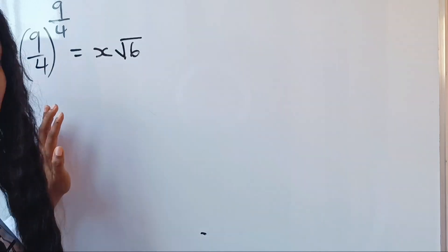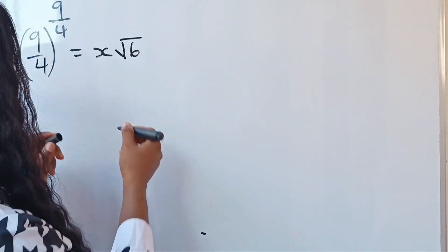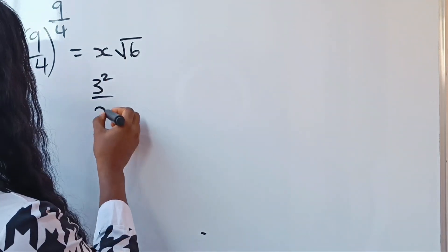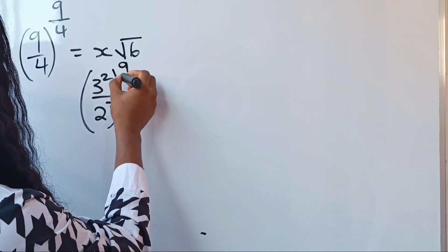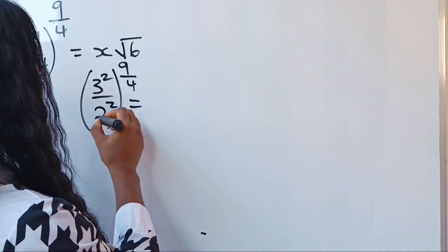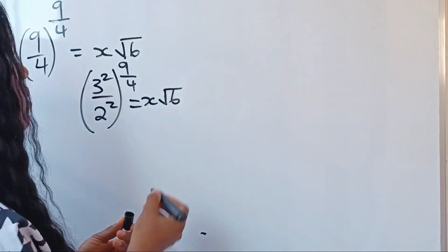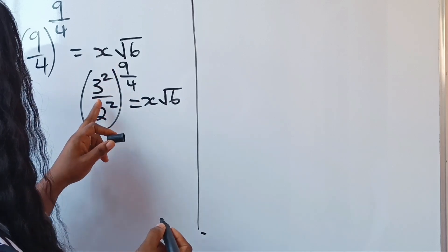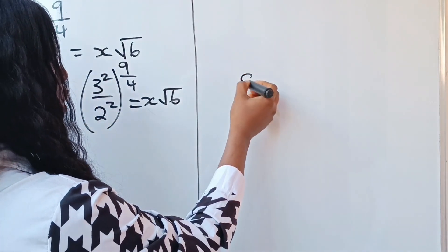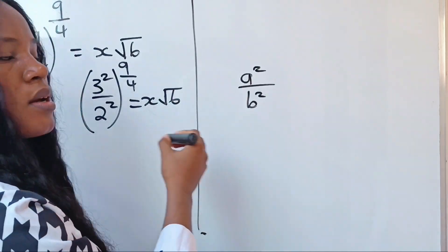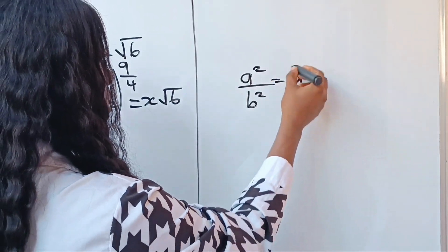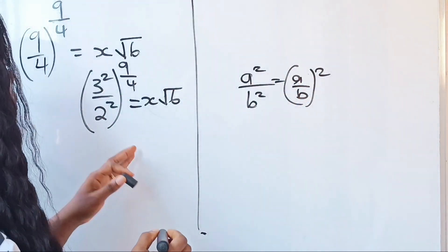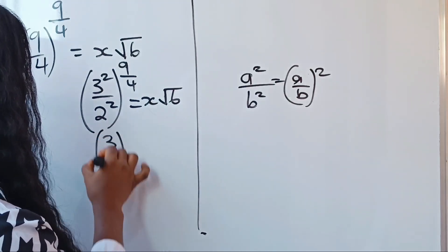To simplify the left hand side, we can write 9 as 3 squared and 4 as 2 squared. So 9/4 raised to the power of 9/4 equals x times root 6. Now, 3 squared over 2 squared can be written as (3/2) squared, since a squared over b squared equals (a/b) squared. So we can write this as (3/2) squared.